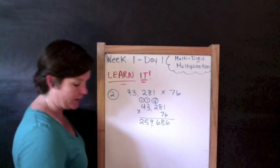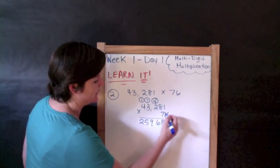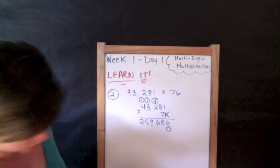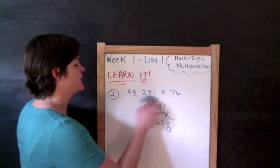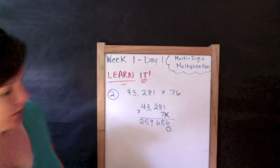Alright, so that's the first part. I'm going to put a zero here. I'm going to cross out my six because I'm done with my first part of my product. I'm going to erase the numbers that I regrouped, the digits that I regrouped to add.